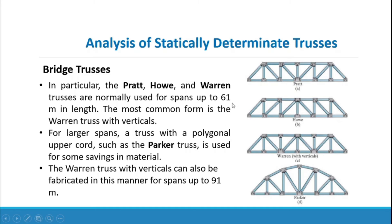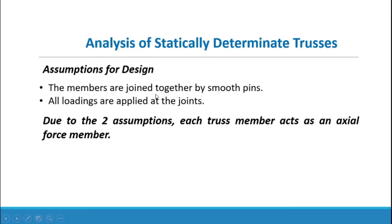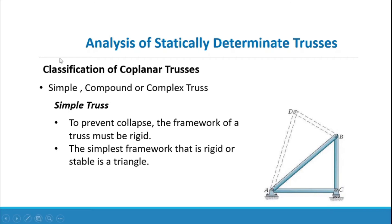For larger spans, a truss with a polygonal upper cord such as the Parker truss is used for savings in material. The Warren truss with verticals can also be fabricated in this manner for spans up to 91 meters. For design assumptions, members are joined together by smooth pins and all loads are applied at the joints. Due to these two assumptions, each truss member acts as an axial force member.